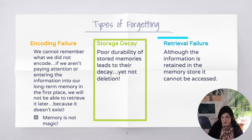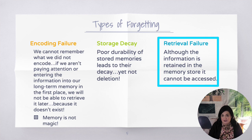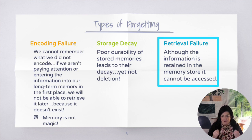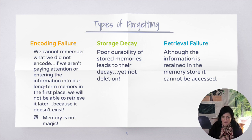The third type of forgetting is a retrieval failure. Although the information is retained in the memory store, it cannot be accessed. You're having trouble pulling it out — some type of moment where you just can't access the thing that you need to remember.